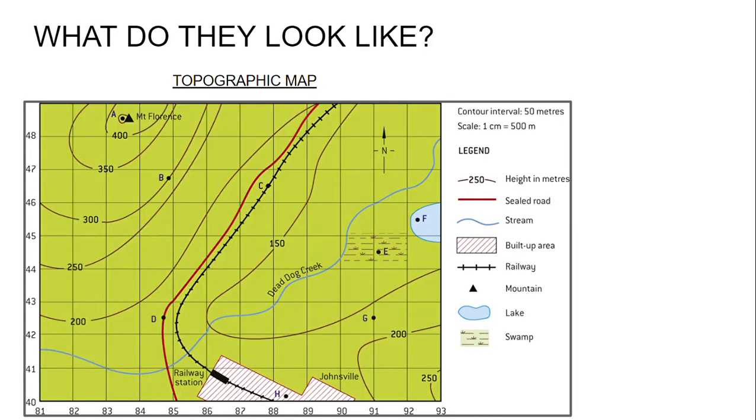The features of topographic maps - what do they look like? A topographic map is used by people like hikers and emergency services to locate locations and plan trips. They have certain features.